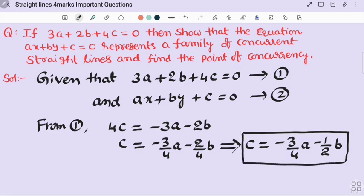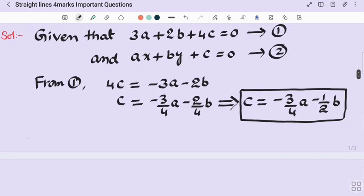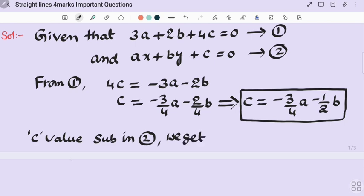This c value substitute in equation 2. We get ax + by, in place of c replace with -3/4 a - 1/2 b = 0.